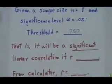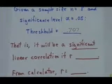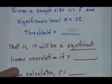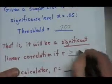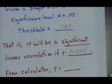That means there will be a significant linear correlation if our R value that we come up with, if it is bigger than 0.707.